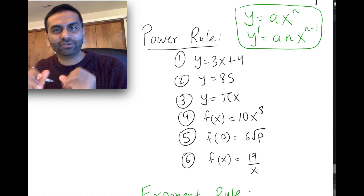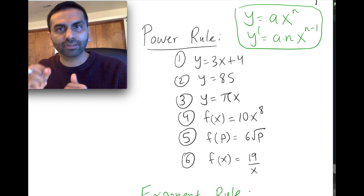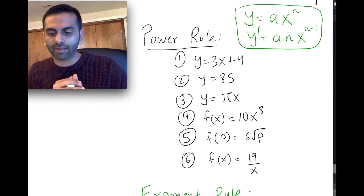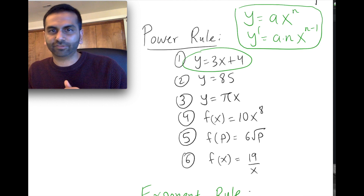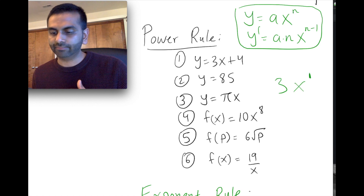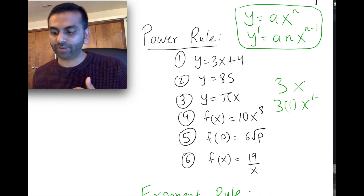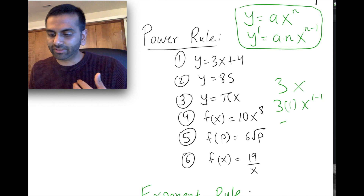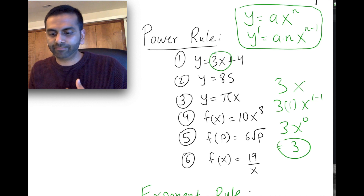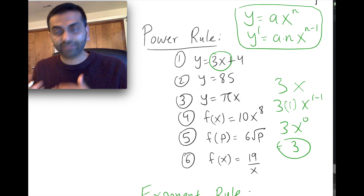If you have two power functions added to each other, the derivative is just the derivative of each term. Let's apply the power rule to y = 3x + 4. Going term by term: the derivative of 3x — well, x is to the power of 1, so applying the rule, you take the 1 down and multiply it. That's 3 times 1 times x to the (1 minus 1) = x to the 0, which is just 3. So the derivative of 3x is just 3.